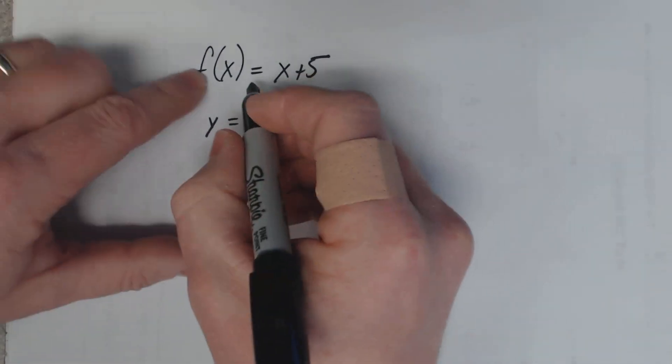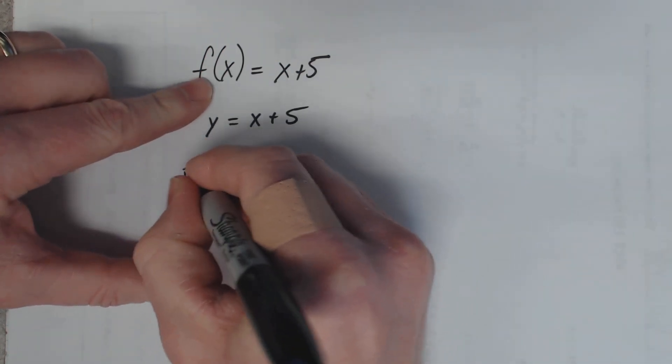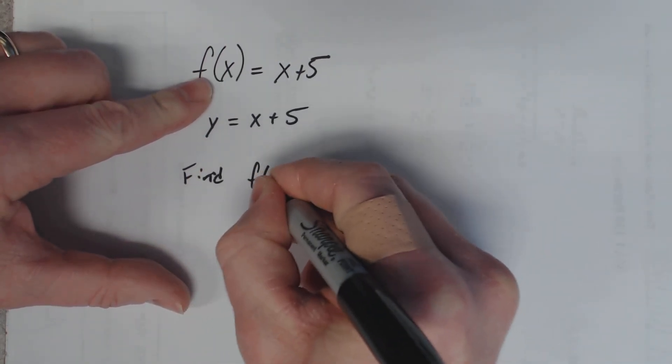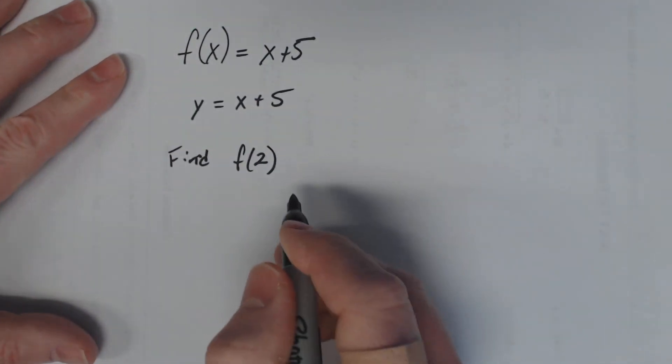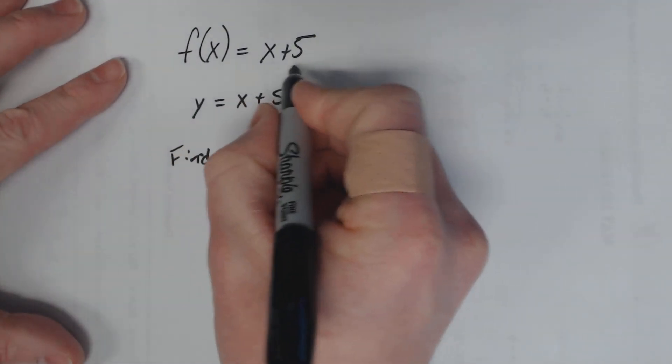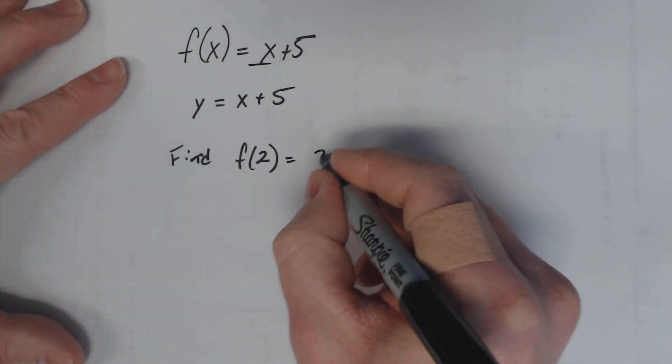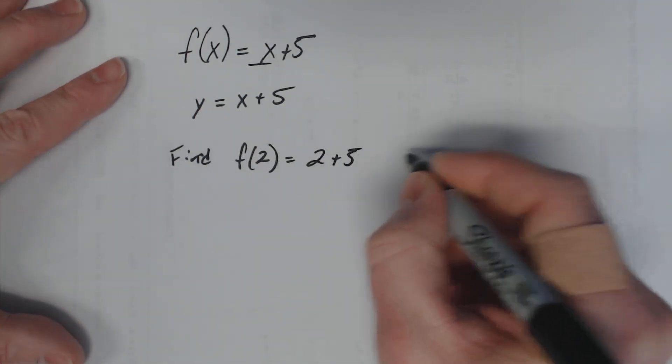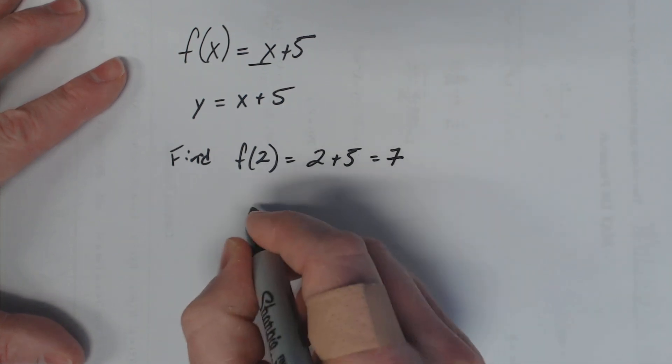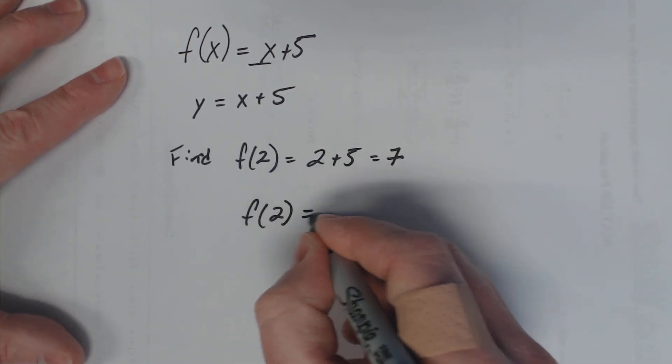So if I said find f(2), it's pretty simple to do. You just come up here, and everywhere you see an x, you put a 2. So to find f(2), it's like saying 2 + 5, which is 7. So f(2) = 7.